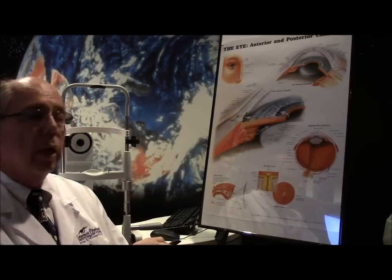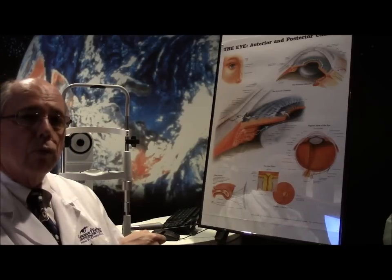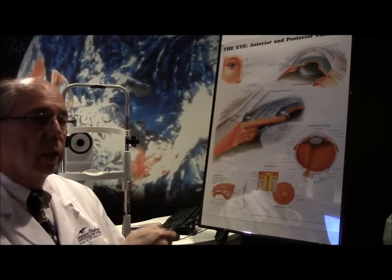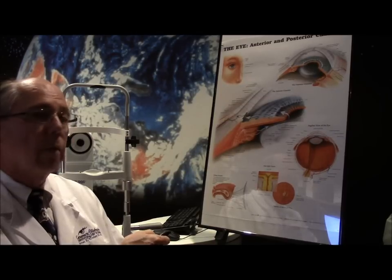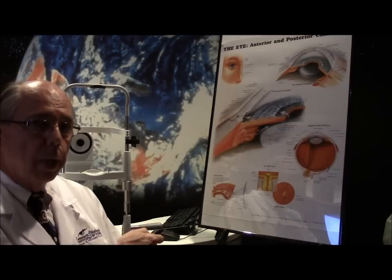When people get angle closure glaucoma, the pupil dilates, your eye gets red, your vision blurs because the cornea becomes cloudy, and you get sick at your stomach and nauseated. In fact, people can start vomiting and have severe pain in their eye.